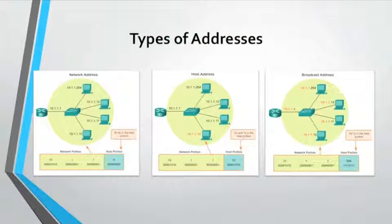Types of addresses: there are three types of addresses within the address range of each IPv4 network — network address, host address, and broadcast address. The network address is a standard way to refer to a network; the subnet mask or prefix length may also be used when referring to a network address. This address has a zero for each host bit in the host portion of the address. All hosts within the network share the same network address.